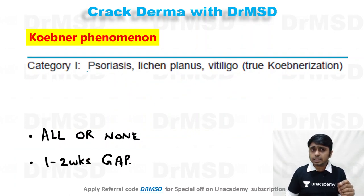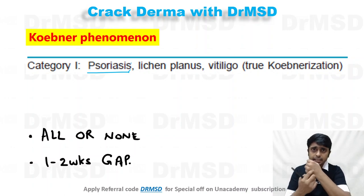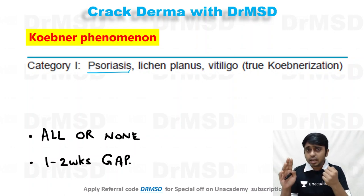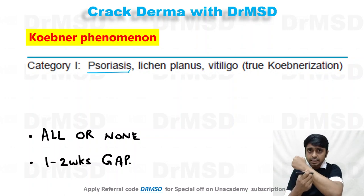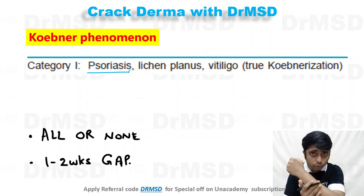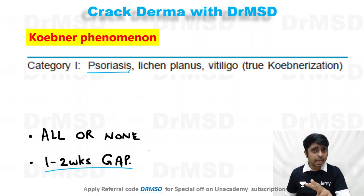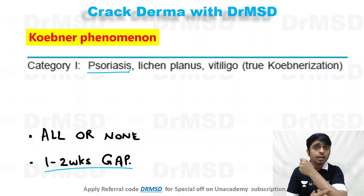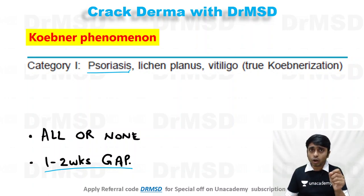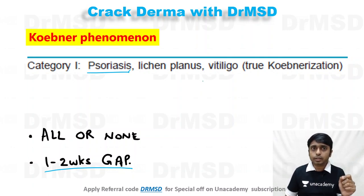Take for example the condition psoriasis. If a psoriatic plaque is present in a patient and you apply trauma with a blunt object to an area where there are no lesions of psoriasis, then you recall the patient after one or two weeks and observe whether any new psoriatic lesion is developing at that site. If there is development of a new psoriatic lesion — erythematous scaly plaques — over the site of the trauma you caused, then you can say the patient has Koebner phenomenon positivity.